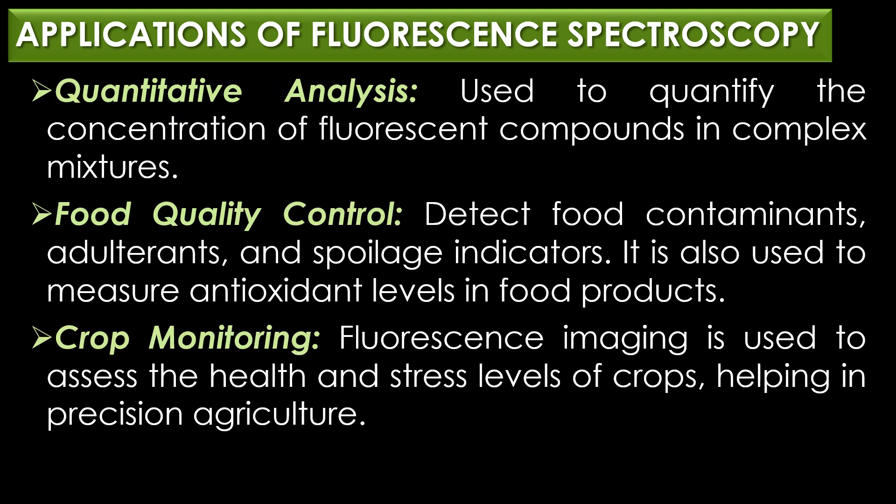In quantitative analysis, fluorescence spectroscopy is used to quantify the concentration of fluorescent compounds in complex mixtures. In food quality control, it can detect food contaminants, adulterants, and spoilage indicators, and is also used to measure antioxidant levels in food products. In crop monitoring, fluorescence imaging is used to assess the health and stress levels of crops, helping in precision agriculture.